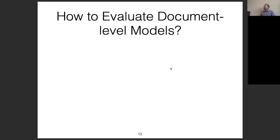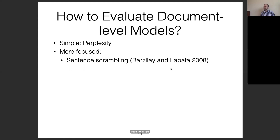How do we evaluate document-level models? The simplest way is by evaluating perplexity. Using long-term context should theoretically improve your overall model capacity, and perplexity is a good way to evaluate that. The only disadvantage is that if modeling long-term context causes worse performance on short-term context, it's hard to disentangle those two effects. If you want to specifically diagnose long-term dependency effects, one metric is sentence scrambling — scramble the sentences in the document and try to put them back in their original order.